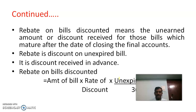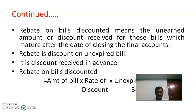For example, if the bill amount is rupees 10,000, the rate of discount is 10%, and the unexpired period is 30 days, then: 10,000 × 10/100 × 30/365. Whatever result we get, that is the rebate on bills discounted.